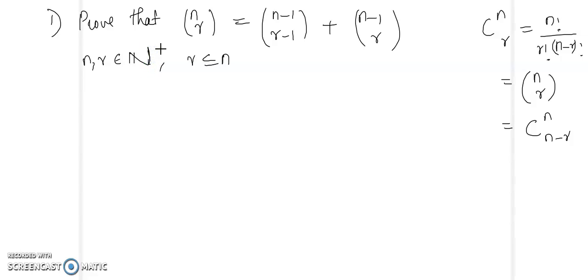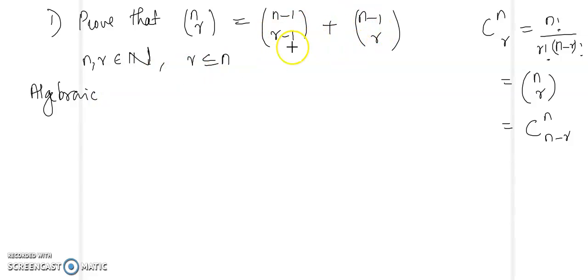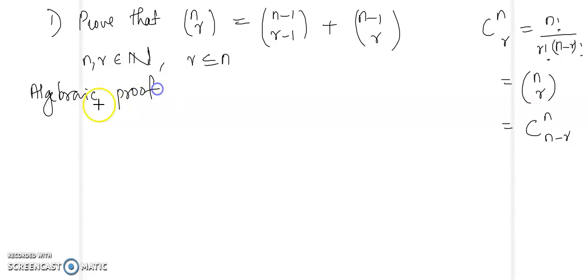We will see two different proofs for this result. The first one is an algebraic proof, where you start with one side and show that the right side sum is the same as the left side. The second proof is a combinatorial proof, where we solve the equation by setting up a combinatorial problem at the base level.